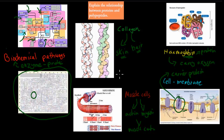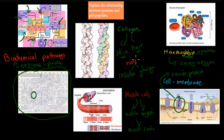There are many more examples. For instance, insulin and glucagon are two proteins that are hormones — chemical messengers. Without insulin and glucagon, we wouldn't be able to control our blood glucose levels. I could go on and on, but the main gist is that proteins are absolutely essential, and we need to have some way that we can make proteins.